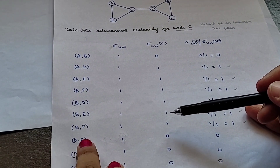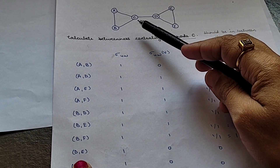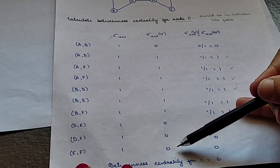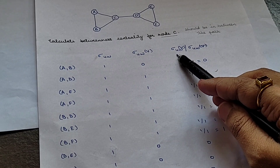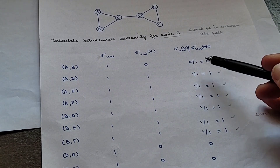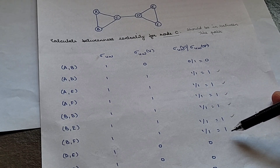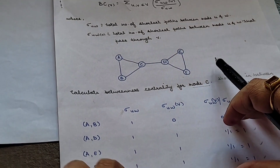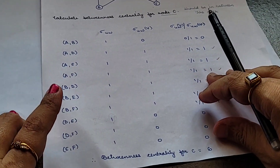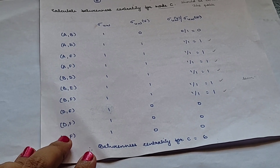Similarly, check D to E: in order to traverse from D to E, node C does not come in between, so this is 0. This applies for similar cases as well. Now divide the sigma(U,V,C) column by the sigma(U,V) column: 0/1 = 0, 1/1 = 1, 1/1 = 1, and so on. Take the summation of all values — 1, 2, 3, 4, 5, 6 — so the betweenness centrality for node C comes out to be 6.